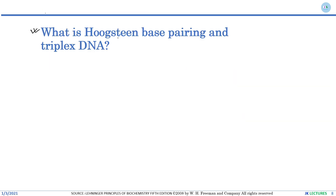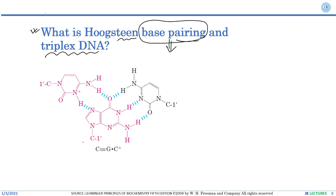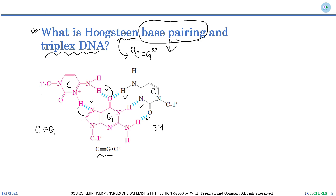Moving to Hoogsteen base pairing — a unique and abnormal phenomenon in DNA structure that leads to formation of DNA triplex or an abnormal DNA duplex. In normal base pairing, cytosine forms three hydrogen bonds with guanine. In Hoogsteen base pairing, cytosine forms only two hydrogen bonds with guanine. You can see in the picture how two different hydrogen bonds are formed between the cytosine and guanine molecule.